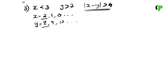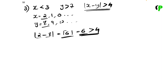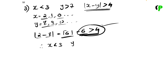So x minus y is 2 minus 8. Taking the modulus, if we get a negative value, the absolute value gives us 6. We check this: the answer is greater than 4. In all cases, we have greater than 4. Therefore, we have proved x minus y is greater than 4.